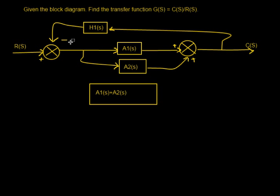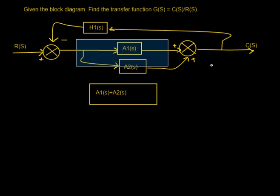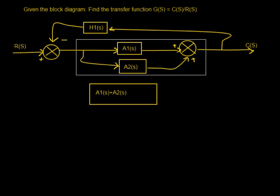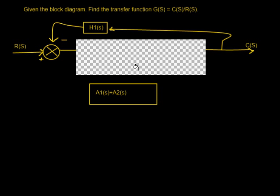You can erase this whole segment. The reason it is plus is because this is a plus and this is a plus. If this was a minus, it would be A1(S) minus A2(S). Now our system is reduced to this.